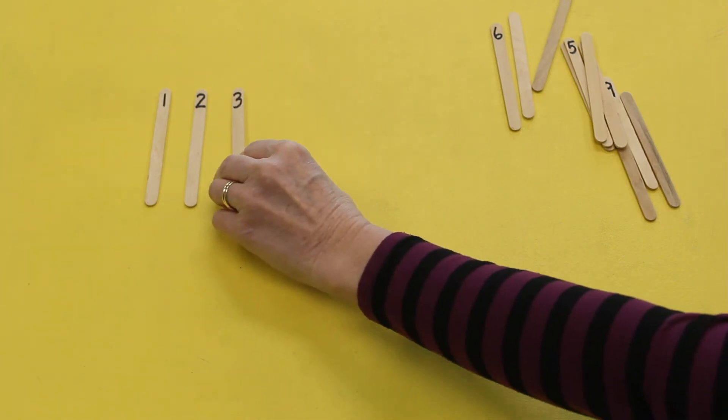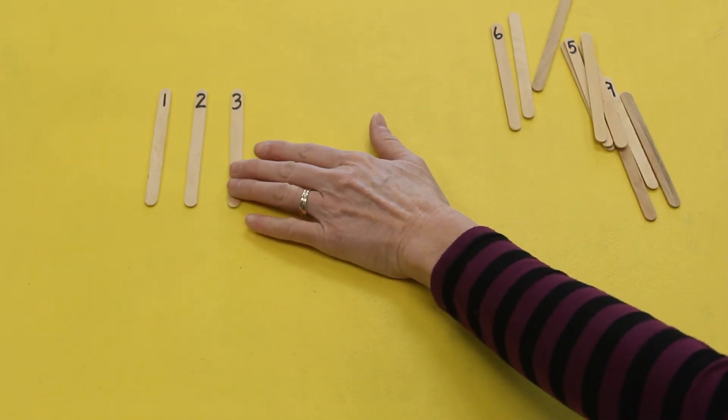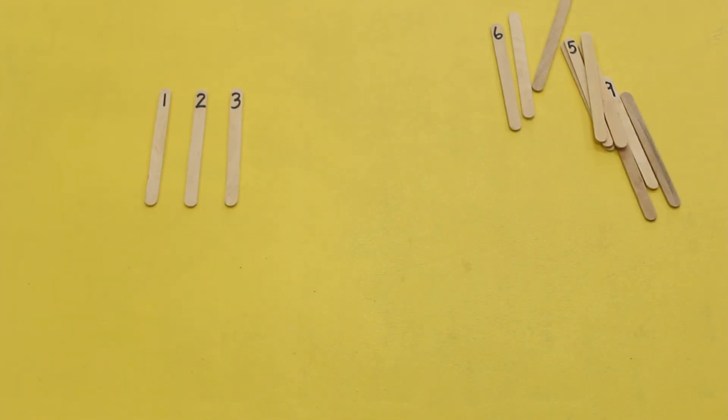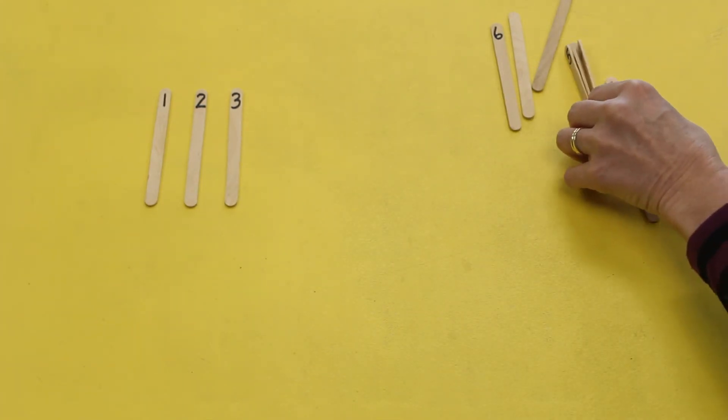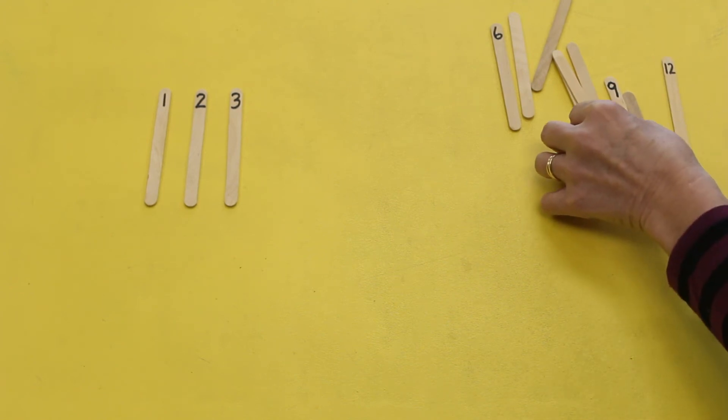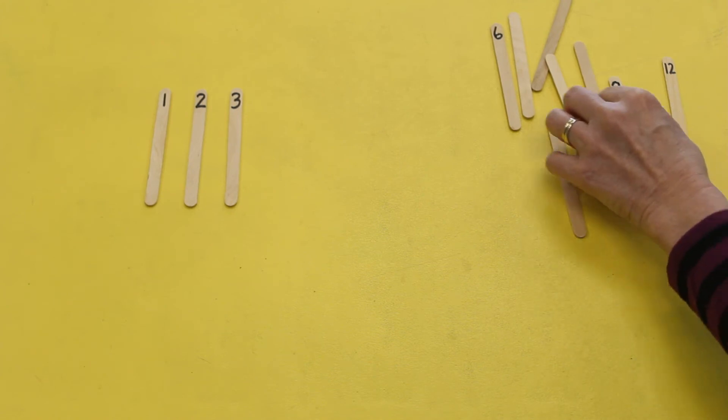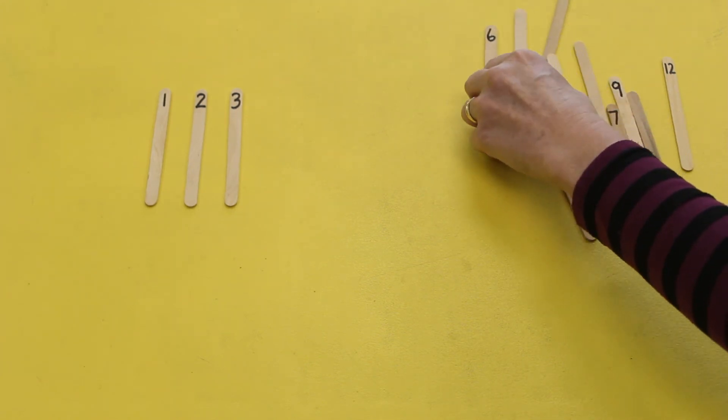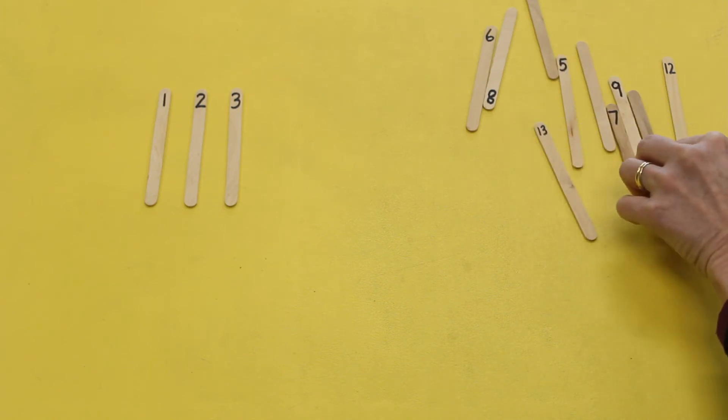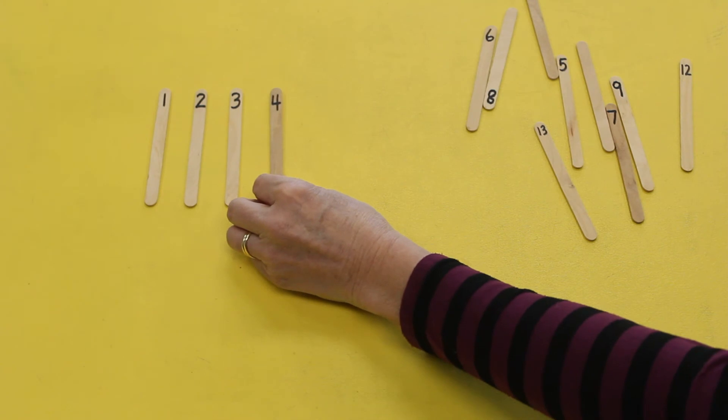Three. Put your three next to the two. Three comes after two. What comes after three? Can you find the numeral that comes after three? Good Michaela, did you say four? Good job, four comes after three.